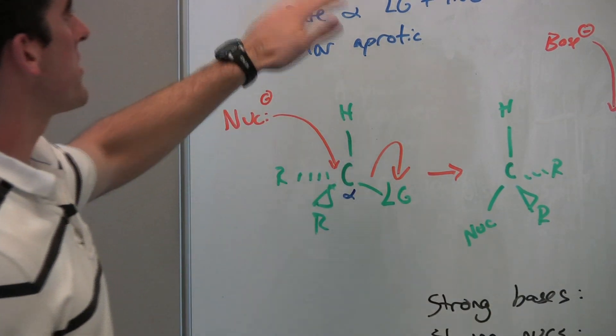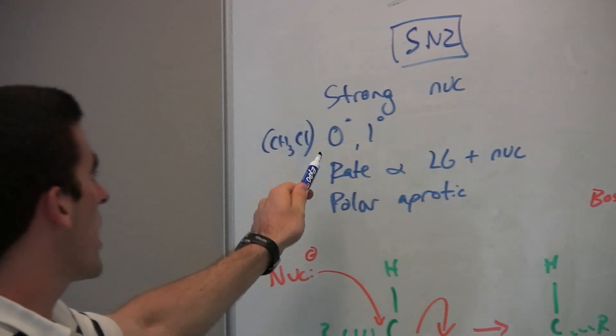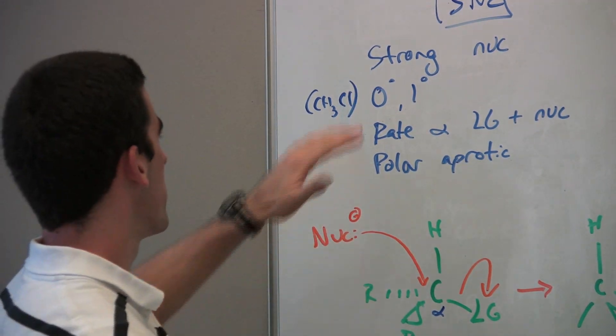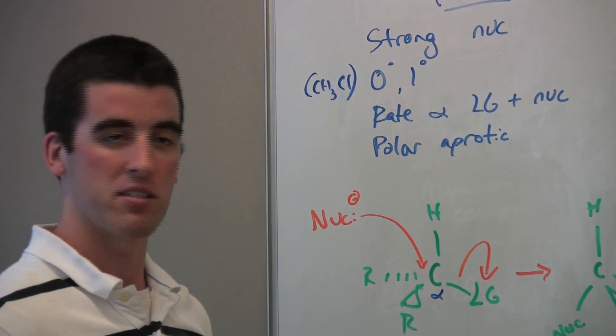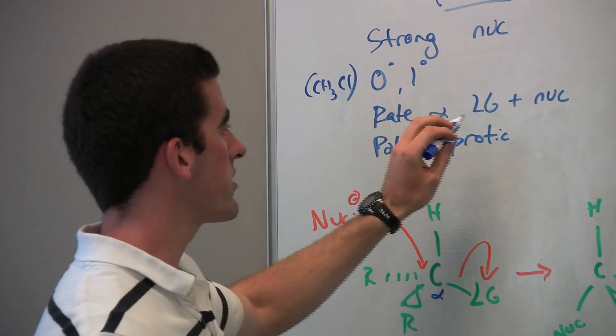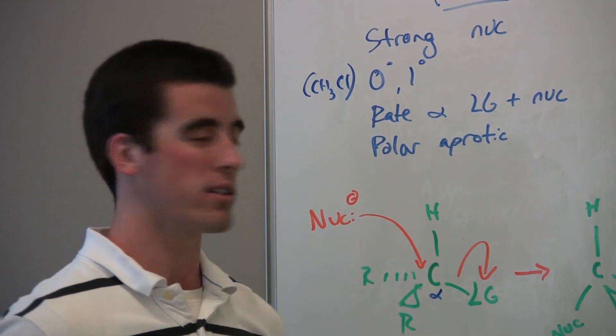So what is a characteristic of the SN2 reaction? We want a strong nucleophile. We want carbons that are either 0° or primary. So an example of a 0°, one will be a CH3Cl just attached to three hydrogens and one leaving group. The rate for an SN2 reaction depends on both the leaving group and the nucleophile and it's best enhanced by a polar aprotic solvent.